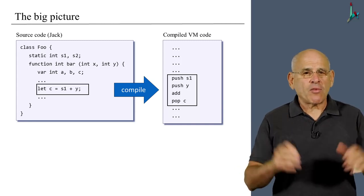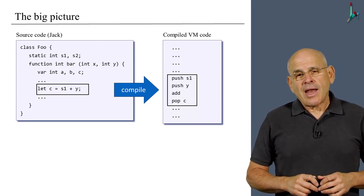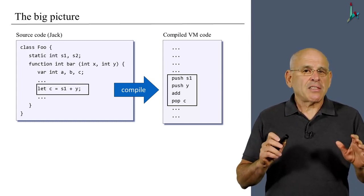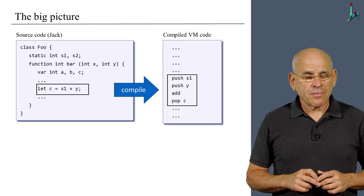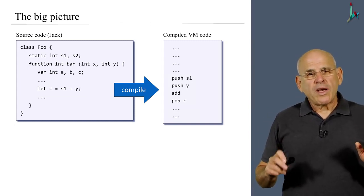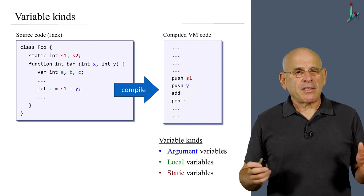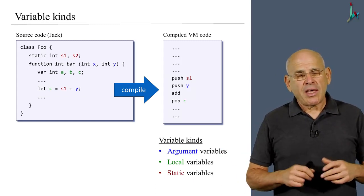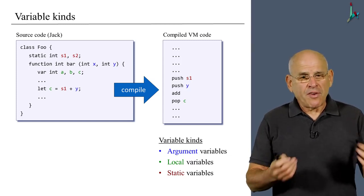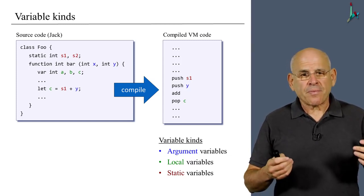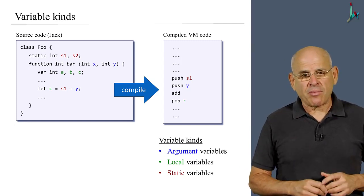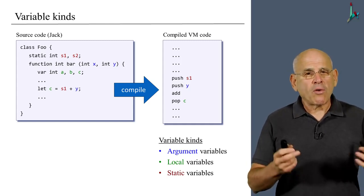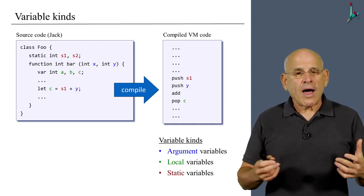How the compiler does it is something that we'll worry about later. I want you to notice that something kind of gets lost in the translation. If you look at the high-level code, we know from our knowledge of the high-level syntax that different variables have different roles. S1, for example, is a static variable. C happens to be a local variable, and y is an argument.